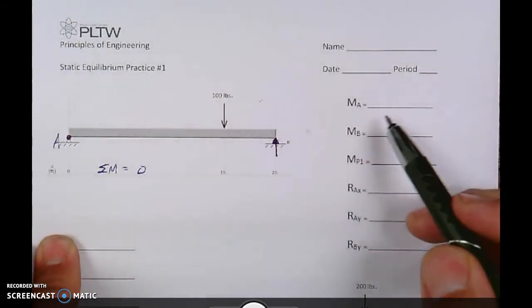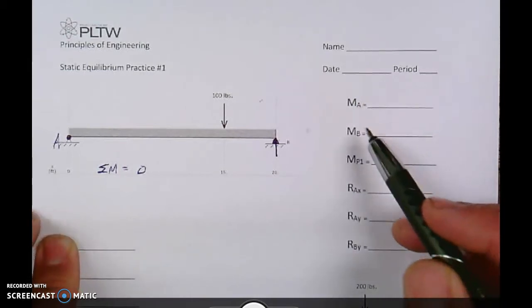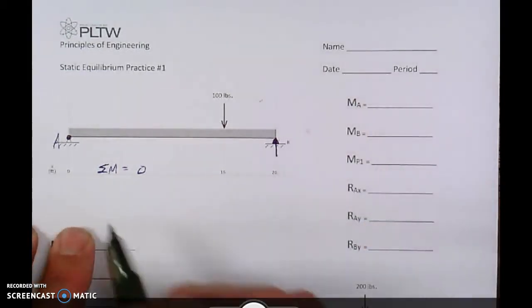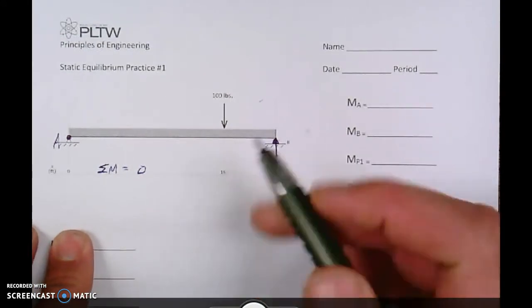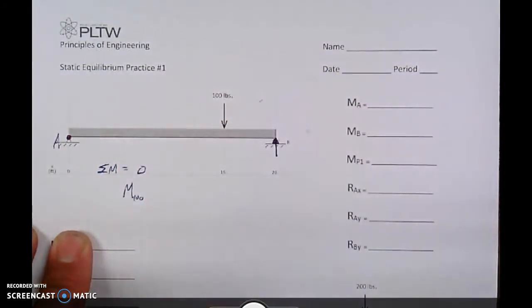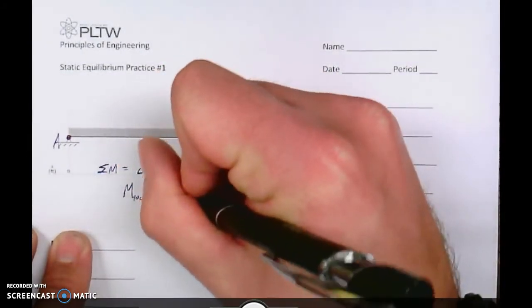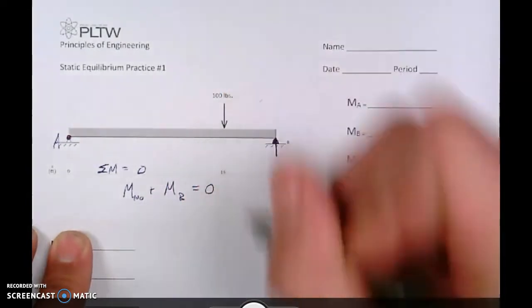So we're going to go about finding each of these, the moments at each one. So, to start off here, we'll have our moment at the 100 pound force. So the moment at the 100 plus the moment at B has to equal zero.